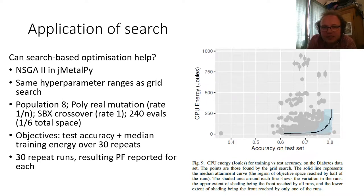The objectives for the run were test accuracy versus median training energy over 30 repeats of the training process. And the plot over on the right shows the results for one data set. And we repeated NSGA2 30 times in order to get a range of Pareto fronts. So what we can see in the plot, the dots are the configurations from the grid search, the exhaustive search, and then the line shows the range of runs from NSGA2. The black line is the median Pareto front. This is the area that was reached by at least half of the runs of NSGA2. And then the shaded area around it are the minimal and maximal Pareto fronts. They're basically the one that was reached by the best runs of NSGA2 and the worst. And you can see there that actually, we're getting close to the global Pareto front, but just missing out on it slightly. So there is certainly some potential here for a search method like NSGA2.